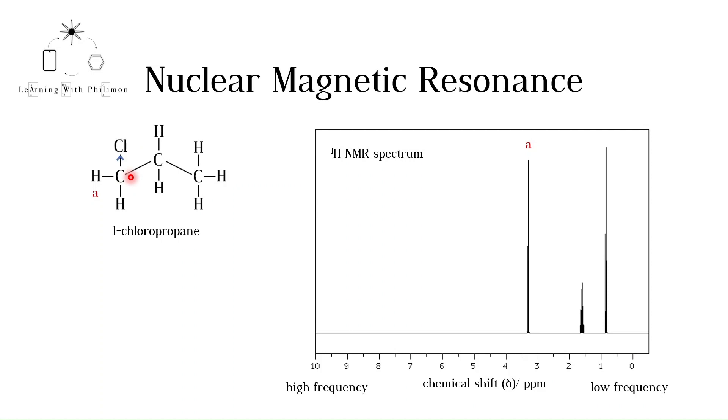Chlorine is more electronegative than carbon, meaning it pulls the shared electrons closer to itself. This has a knock-on effect as the slightly positively charged carbon also pulls the electrons of the CH bonds closer to itself. The final result is that these two hydrogens have fewer electrons around them. Remember that electrons generate a magnetic field that shields nuclei from the external magnetic field. However, when hydrogen nuclei are near electronegative elements, they are deshielded.